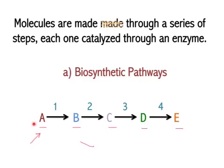For example, to go from precursor A to intermediate B, you need enzyme number 1 to convert A to B. You need enzyme 2 to convert B to C, and so on. So here is where we can have multiple genes affecting the same phenotype. If product E allows us to have a particular phenotype, and you have a mutation in the gene that produces enzyme number 3, you will not get product E and you will look mutant.